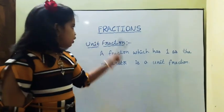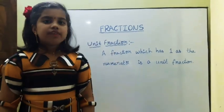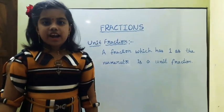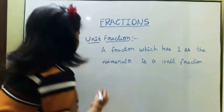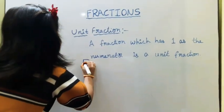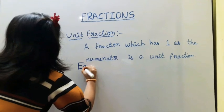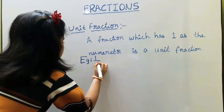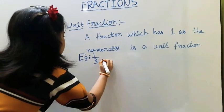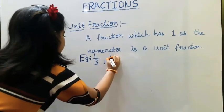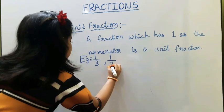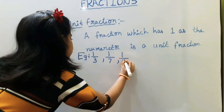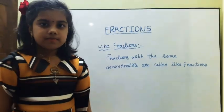Next, I am telling about unit fractions. A fraction which has 1 as the numerator is called a unit fraction. For example: 1 upon 3, 1 upon 7, 1 upon 11, etc.